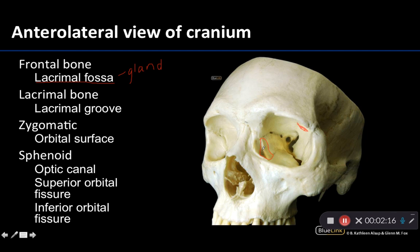The lacrimal groove is right here, and this is where your lacrimal sac sits — this is the proximal dilation of the nasal lacrimal duct, and this is where tears collect before they drain into the inferior nasal meatus. So tears are secreted at the gland, make their way to the lacrimal groove into the lacrimal sac, and eventually into the inferior nasal meatus.